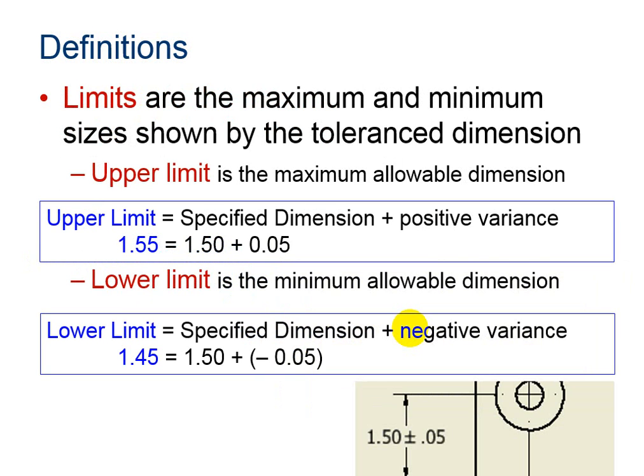Limits are the maximum and minimum sizes shown by the tolerance dimension. The upper limit is the maximum allowed. So we take the specified dimension, add the positive variance, and my upper limit in this example is 1.55. The lower limit is the minimum dimension that is allowed. So we take the specified dimension and subtract the negative variance, and that gets us 1.45, which is the smallest amount that we will be allowed to have.